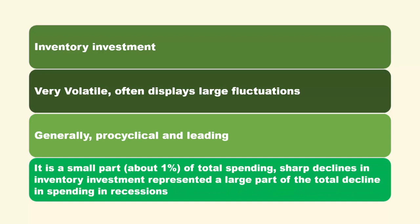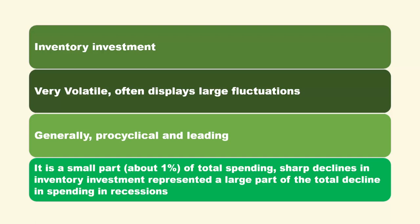Although inventory investment represents only about 1% of total spending, its sharp fluctuations account for almost 50% of the total decline in spending during recessions. This makes inventory investment the most volatile component of investment overall.